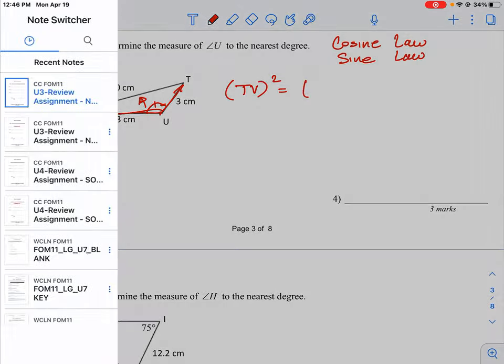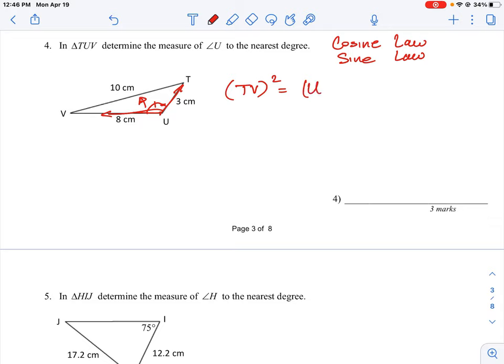plus UT squared minus two times each of those sides. So it'll be UV and TU times, I'm going to squeeze this in here, cosine U. So we could just use simple letters to write those out, but that's what we would end up solving for here in the cosine law.